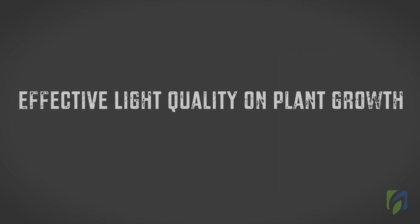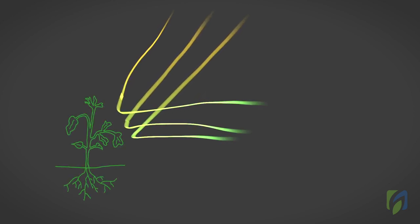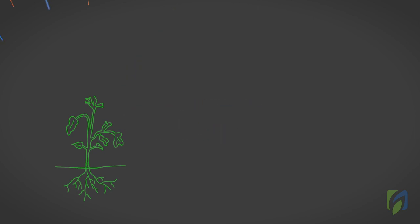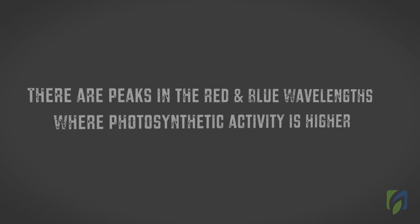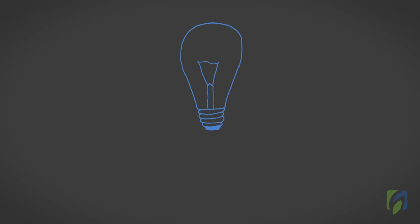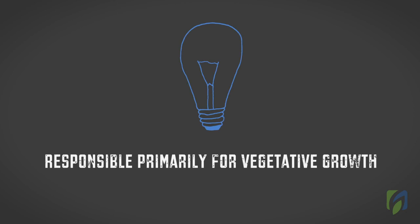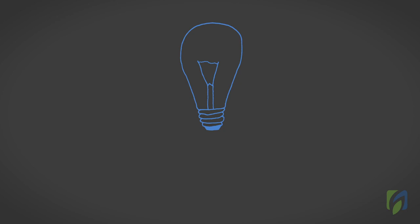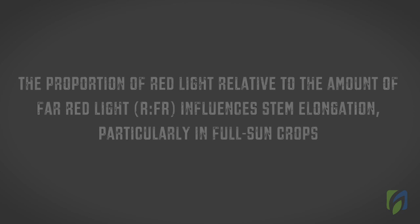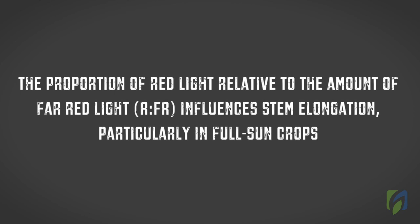Effective light quality on plant growth: plants appear green to us because they reflect, rather than absorb, green light. Red and blue light, which plants absorb, have the greatest effect on plant growth. There are peaks in the red and blue wavelengths where photosynthetic activity is higher. Blue light is responsible primarily for vegetative growth; when blue light alone is supplied to plants, growth is shorter, hard, and dark in color. The proportion of red light relative to far red light, referred to as the red to far red ratio, influences stem elongation, particularly in full sun crops.